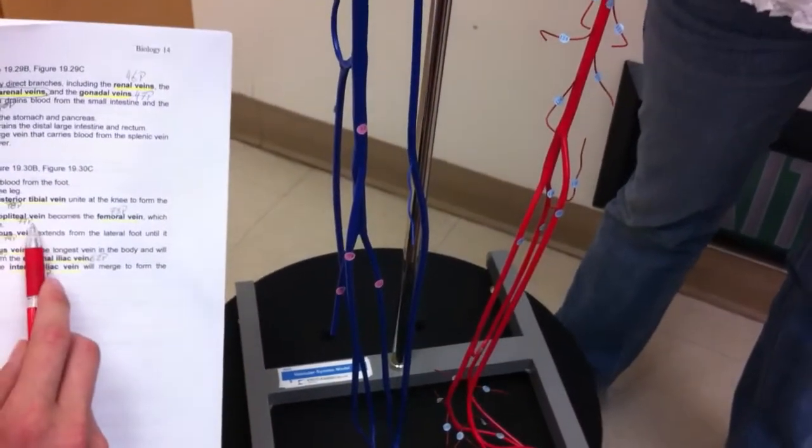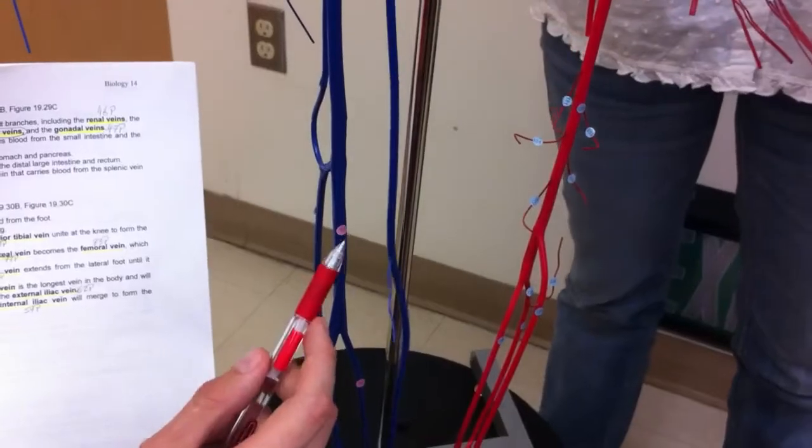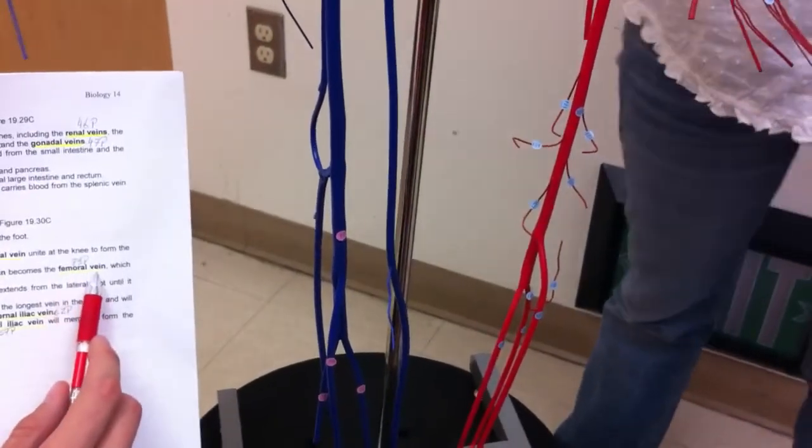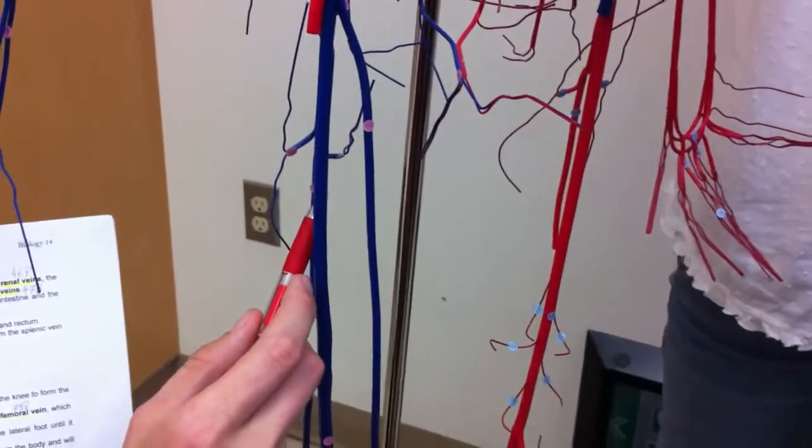Next we got the popliteal vein, popliteal means knee I believe, that's number 77. The femoral vein, number 73, right here, that's the femoral vein.